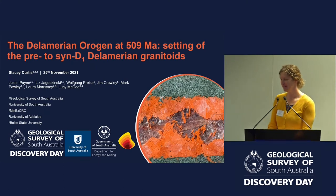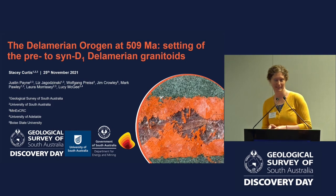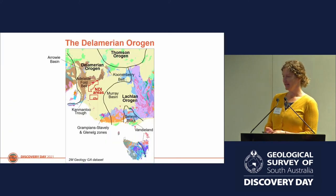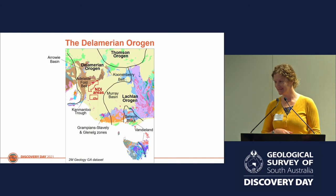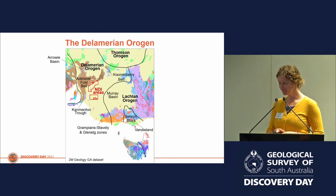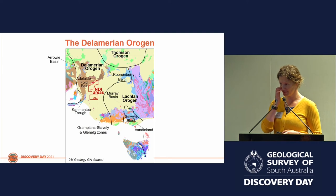Thank you Carmen. I'll start by thanking my co-authors, especially Liz and Wolfgang, who collected some of the data I'll present today long before I started working on the Delamerian. The Delamerian is Cambrian to Ordovician in origin and occupies East and South Australia, Western Victoria, New South Wales, and Tasmania. In a nutshell, there was an arc that developed in the Staveley Zone in Victoria, and along this subduction zone a microcontinent called Fandiland came from the south, collided, and terminated the deformation which we call the Delamerian Orogeny.